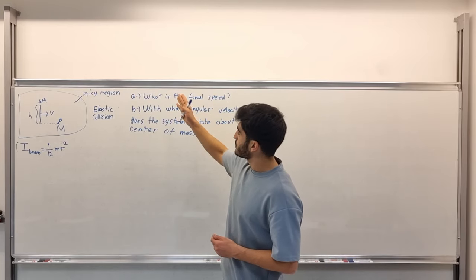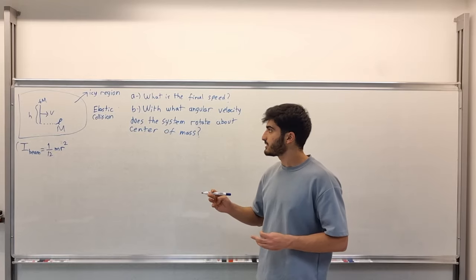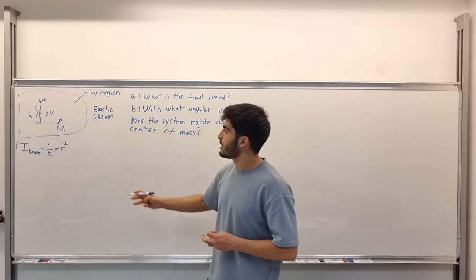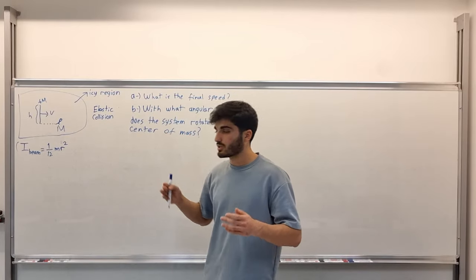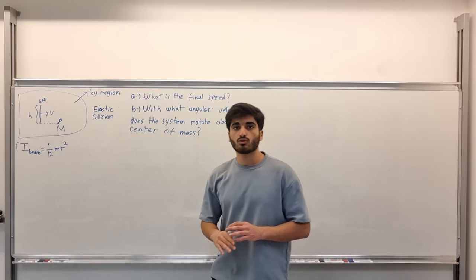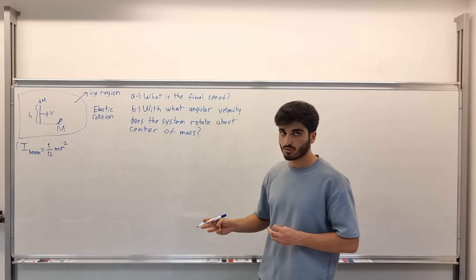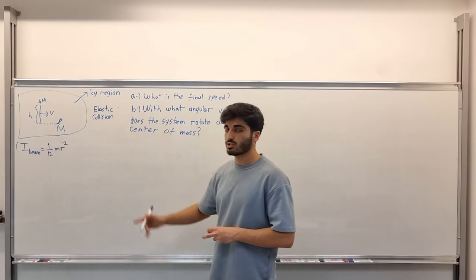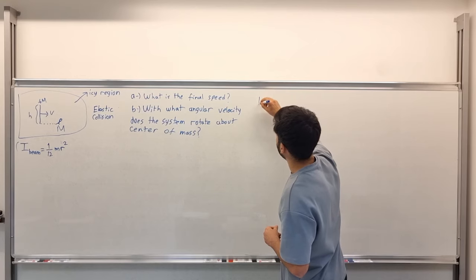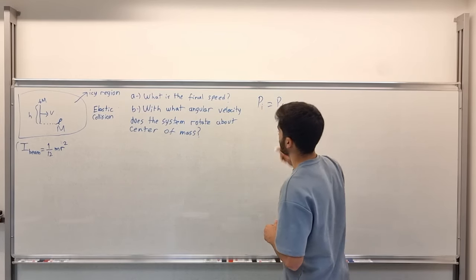For the first part, what is the final speed? We can calculate this from the conservation of linear momentum, because this is an ice region and there is no external force. So the system with the beam and the man should be a conservative system, and therefore the linear momentum is conserved. This is an elastic collision, so we can write: linear momentum initial equals linear momentum final.